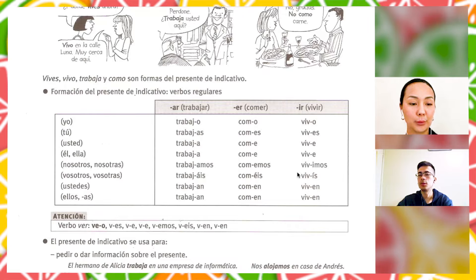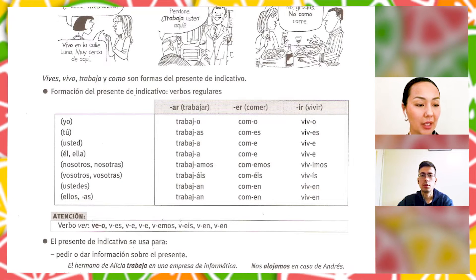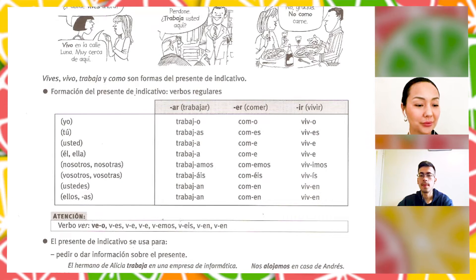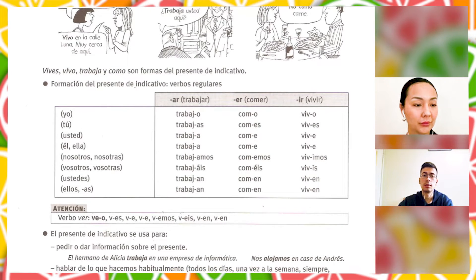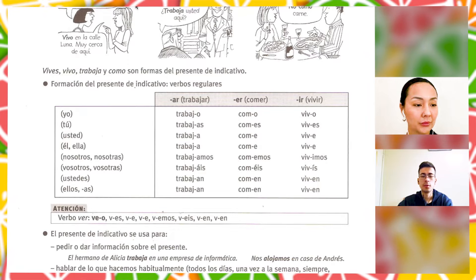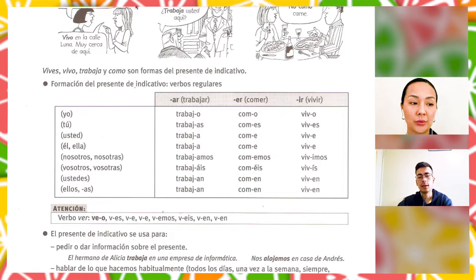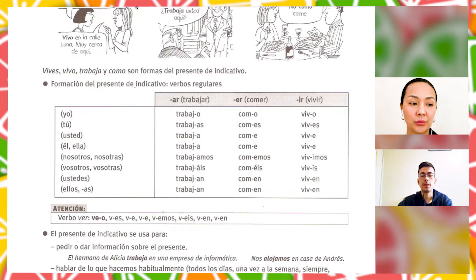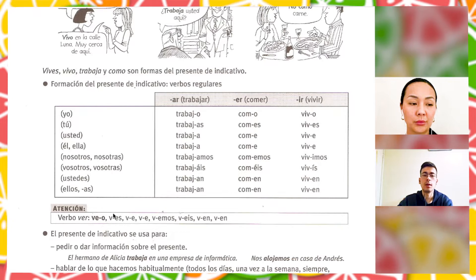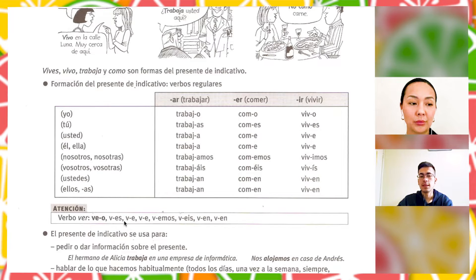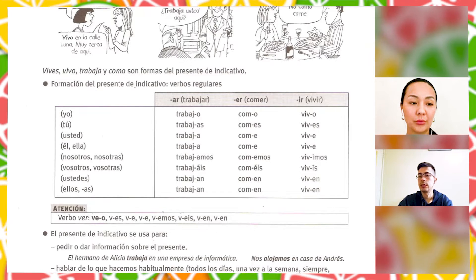And that's the form for the verbs. As usual, atención — we have the verb VER, which we have to keep in mind, because here we don't delete the vowel E, we keep it. So we just add O: VER → veo, and then ves, ve, vemos, veis, ven. So we just add O, and that's all.